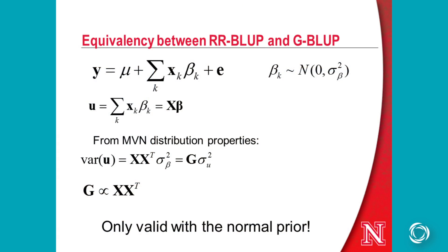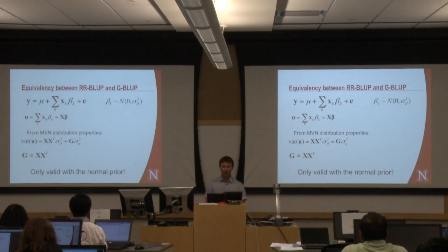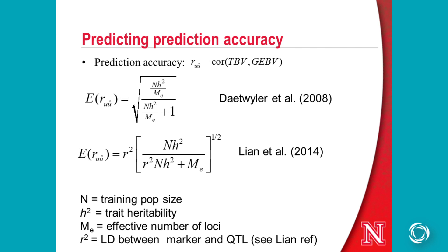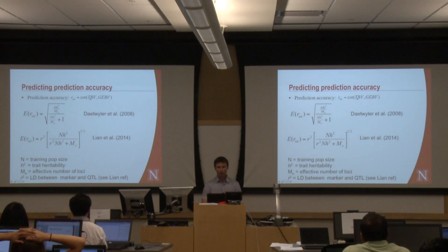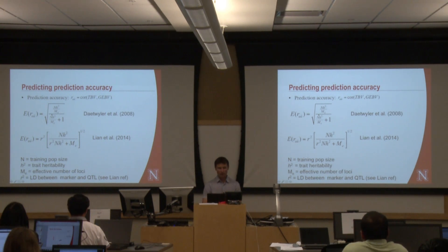There are some equivalencies between RBLUP and GBLUP that come out of properties of the multivariate normal distribution. I'll demonstrate that in the script. Regarding factors affecting prediction accuracy, there are equations from a couple of papers using population size, heritability, and effective number of loci to predict expected prediction accuracy. Prediction accuracy here is the correlation between the true breeding value and the genomic estimated breeding value.